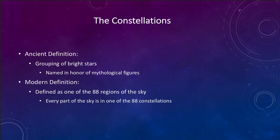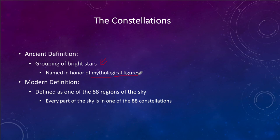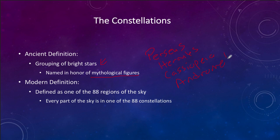The planets will at specific times form this little loop, which was very important for our understanding of the motions of the planets. The other thing we see are the constellations. Constellations are groupings of stars, and the definition of them has changed. Long ago, they were simply groupings of bright stars. Not every part of the sky was part of a constellation — if there were no really bright stars, it was not part of a constellation. They were named in honor of mythological figures — things like Perseus, Hercules, Cassiopeia, and Andromeda.